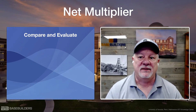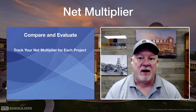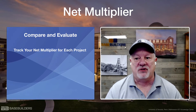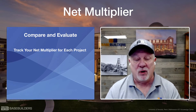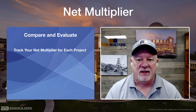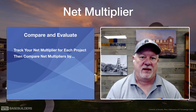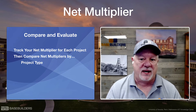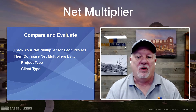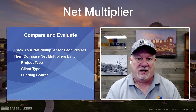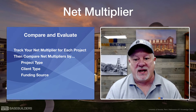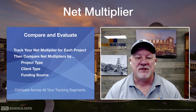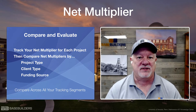Now you want to compare and evaluate. You want to track your net multiplier for each project and then compare multipliers. And you're going to do this by different segments — maybe you're going to compare project types, or client type, or funding sources. Use this net multiplier and compare across all your tracking segments so you can identify your best projects.